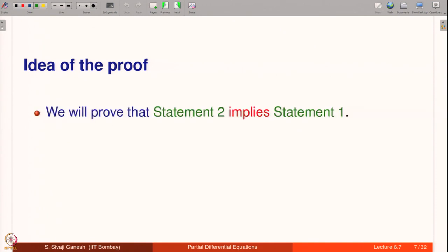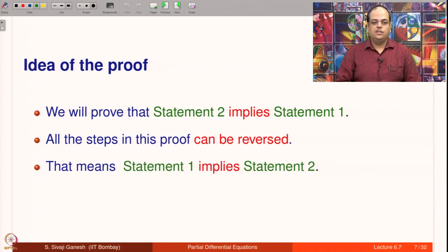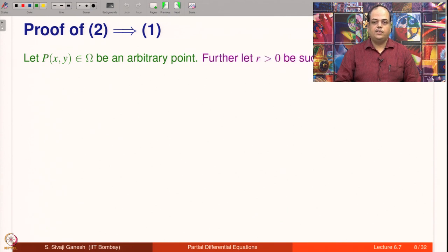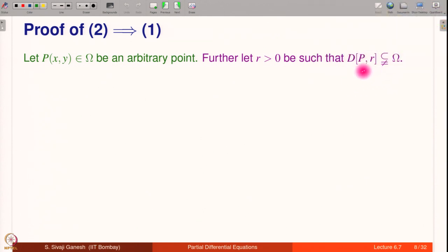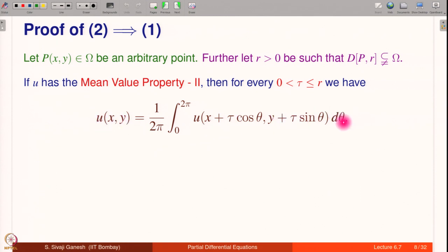We are going to prove that statement 2 implies statement 1. All steps in this proof can be reversed, meaning statement 1 implies statement 2. Let P be an arbitrary point in omega, and let R positive be such that the closed disc with center P and radius R is inside omega. If U has mean value property 2, then for every τ ≤ R we have the equality: the mean on the circle equals U at the center. This holds for every τ ≤ R because if D(P,R) is in omega then D(P,τ) is also a subset of omega.